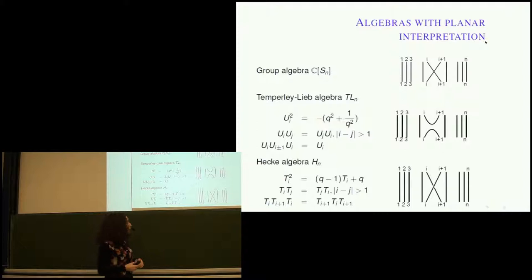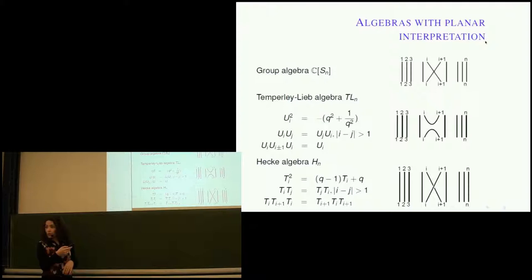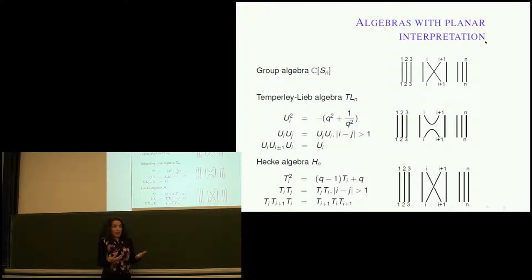Now I'll switch gears and try to relate what I'm talking about to the Temperley-Lieb algebra that Lou told us about. That algebra is not lonely among algebras with planar interpretations. For example, just the group algebra of the symmetric group, generated by transpositions, can be visualized diagrammatically. The transposition switching i and i+1 is presented as two crossing lines with everything else as the identity.